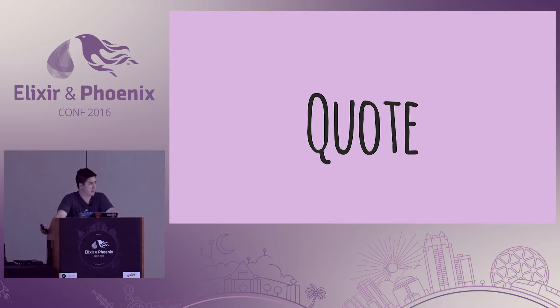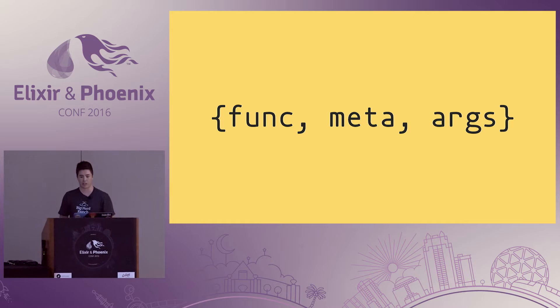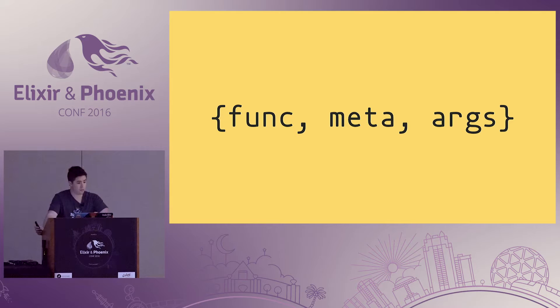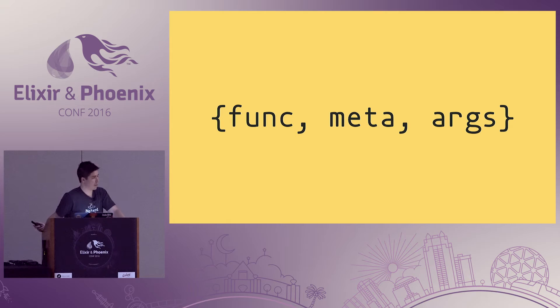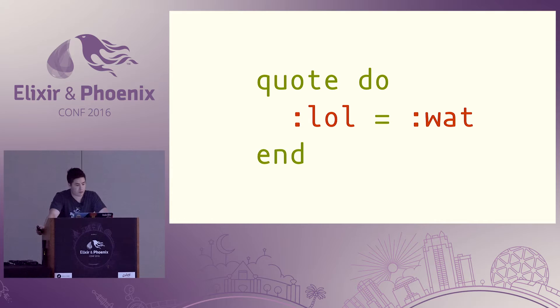Let's talk about `quote`. In review: the `quote` macro produces three-element tuples composed together to make arbitrarily complex expressions of Elixir code. The first element is a function being called by that expression. The second element is metadata — things like the module the function is defined on, or other modules that need to be imported. Oftentimes we're not too worried about the metadata but it's useful to know. The last element is the argument list — the list of arguments provided to that function. It also may be additional quoted expressions nested within, which is how precedence is expressed.